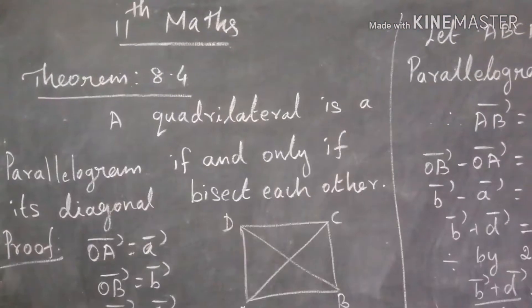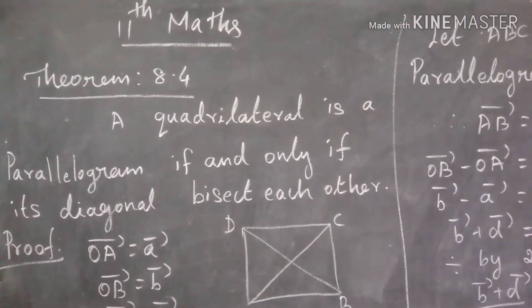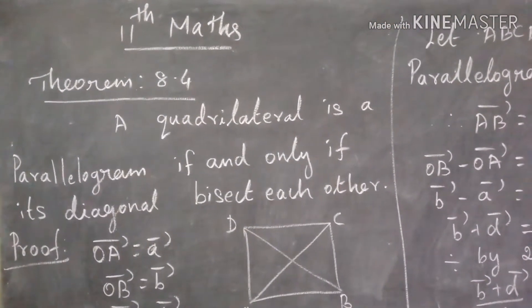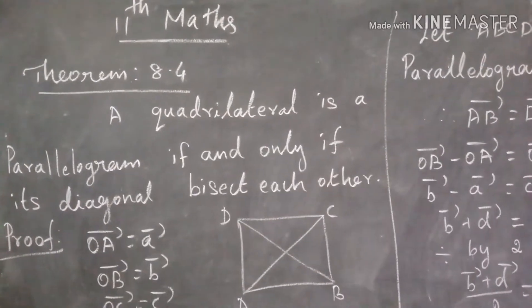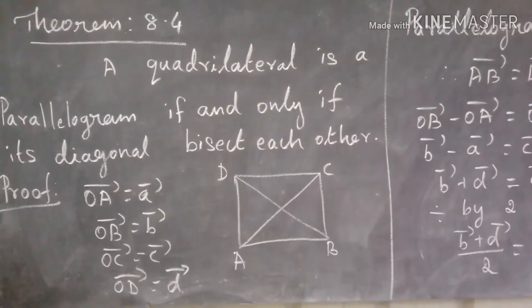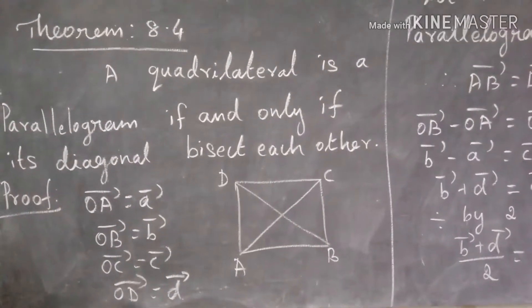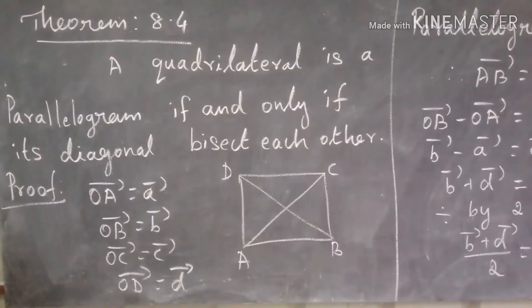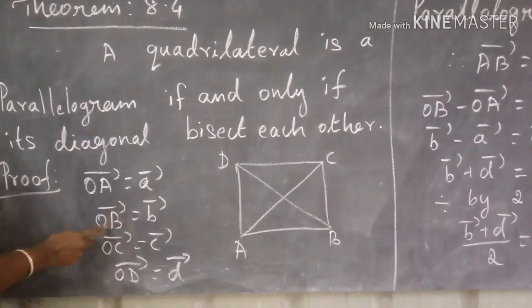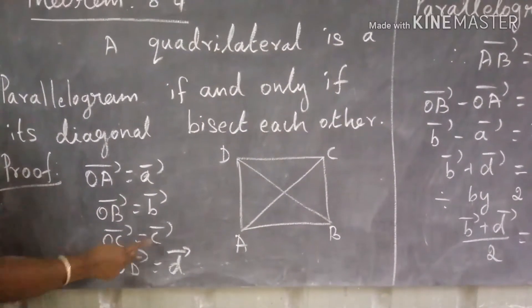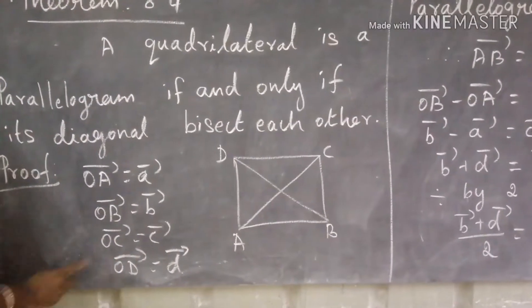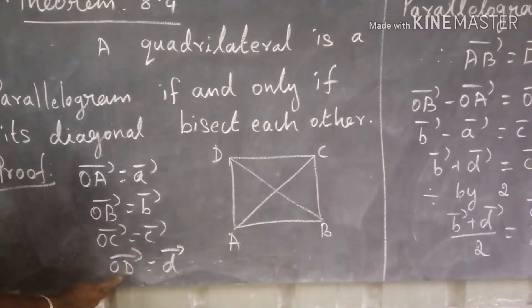Theorem 8.4: A quadrilateral is a parallelogram if and only if its diagonals bisect each other. Given ABCD is a parallelogram, we need to show OA equals OC and OB equals OD, meaning the diagonals bisect each other at point O.